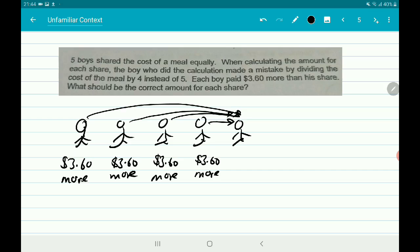So which means that, how much is the last boy supposed to pay? You take $3.60 and you times 4. So the last boy is supposed to pay $14.40.